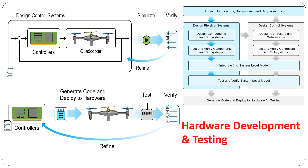Hardware Deployment and Testing: once the physical system and control systems are designed, we could use automatic code generation to generate production code directly from our model. The flight control algorithms could be deployed directly to embedded hardware on the quadcopter for further testing. This helps eliminate hand-coding errors and reduces turnaround time for hardware tests, enabling engineers to focus on the design tasks in the model.